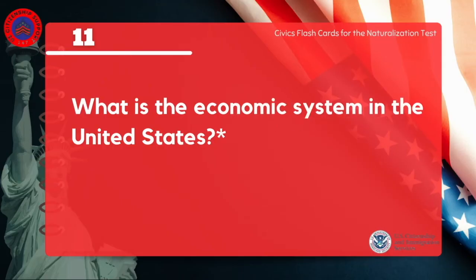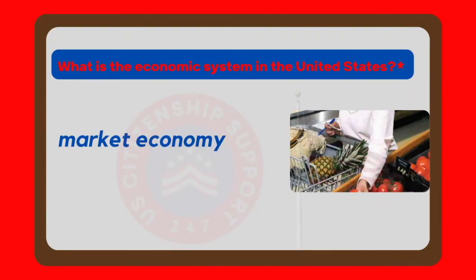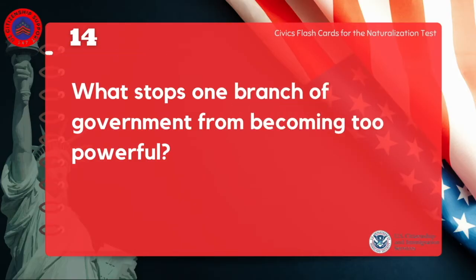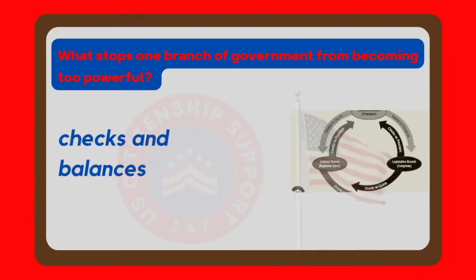What is the economic system in the United States? Market economy. What stops one branch of government from becoming too powerful? Checks and balances.